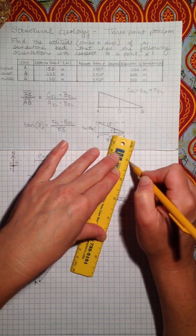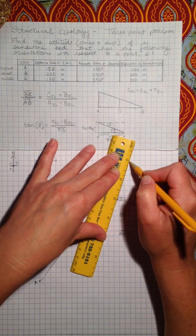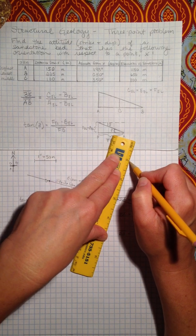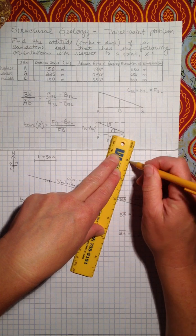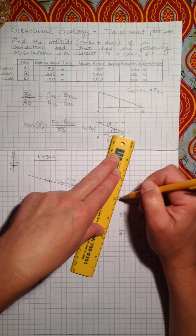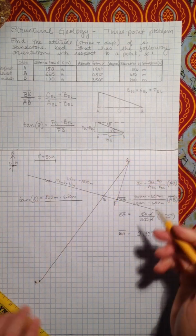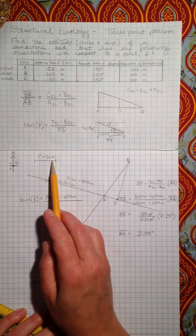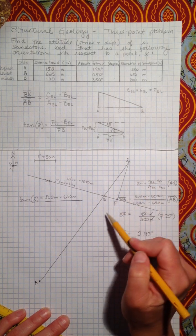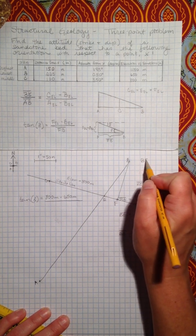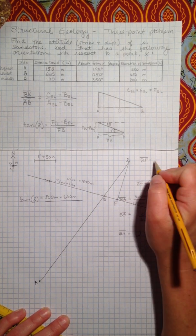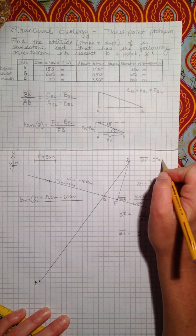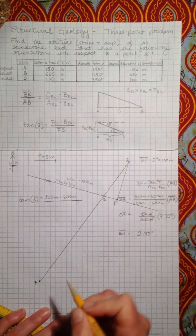So we have exactly two inches between B and F. So if we have exactly two inches, that means we have exactly 100 meters between B and F. The distance from B to F equals two inches equals 100 meters. Lovely.